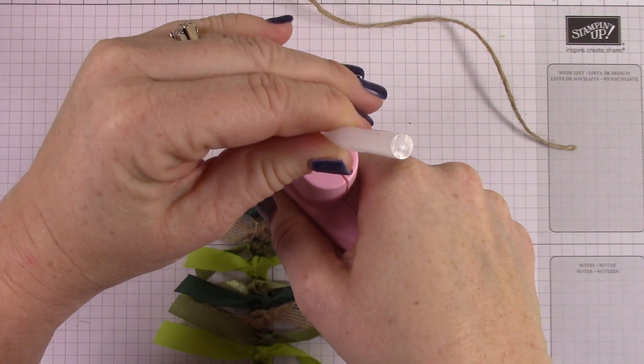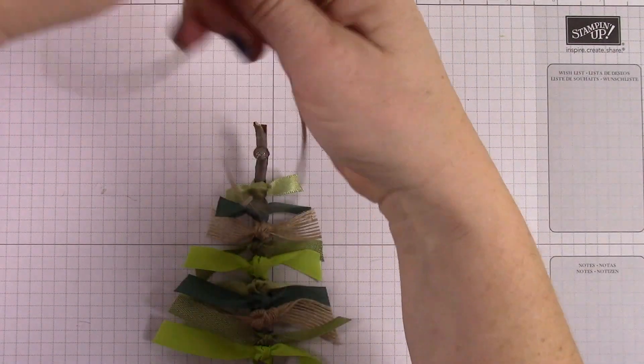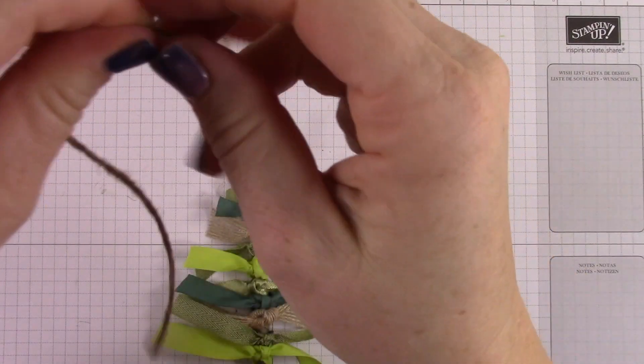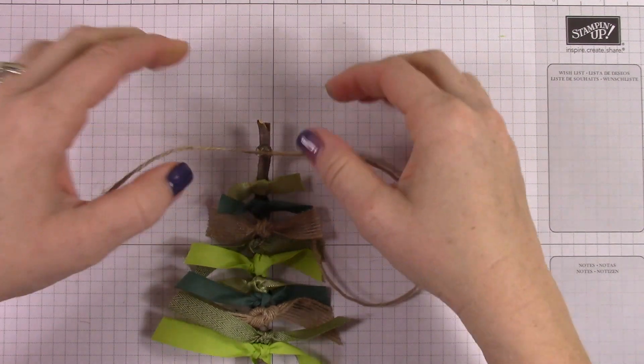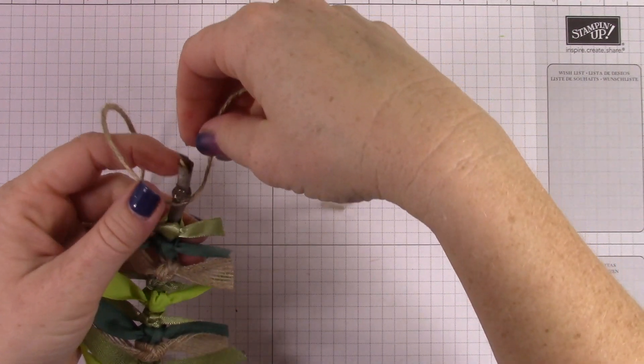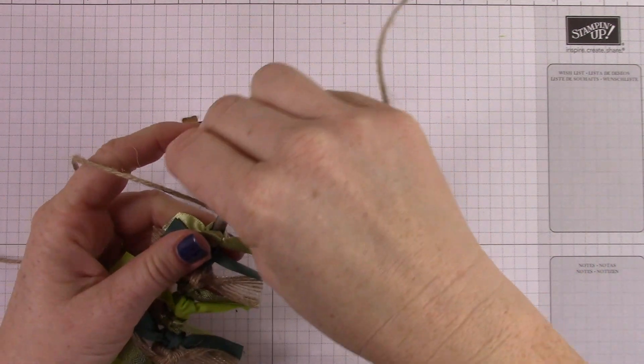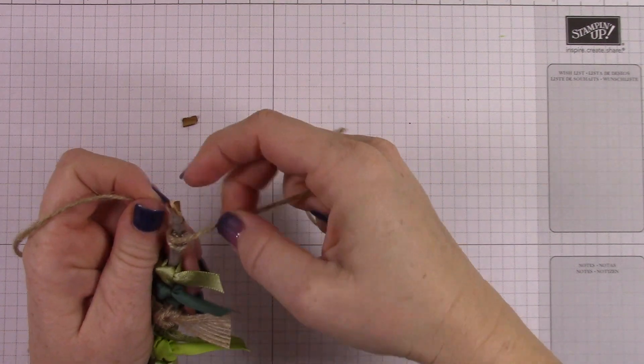Alright, now I'm using my hot glue gun, which sucks because you shouldn't have to push your glue through your hot glue gun, but anyway. I've got a piece of jute twine and I'm gonna wrap it two times around the top of the stick, just around in a circle. I use the hot glue because I really wanted to make sure this stayed put.